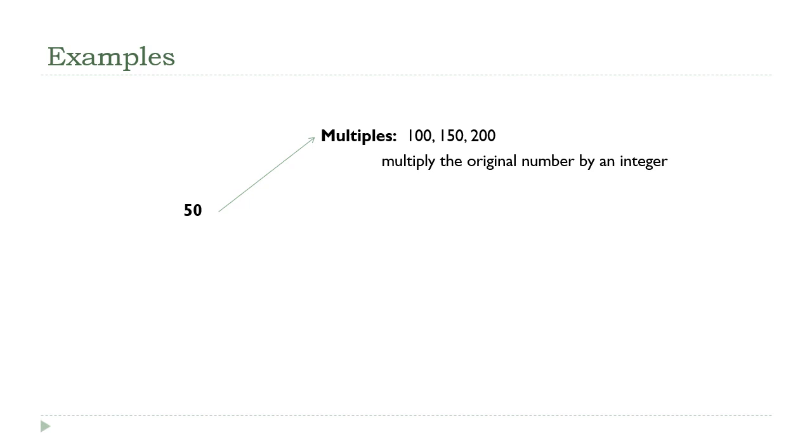To get multiples of 50, we just start multiplying it by other integers. For example, 2 times 50 is 100, 3 times 50 is 150, and 4 times 50 is 200. So 100, 150, and 200 are three multiples of 50.